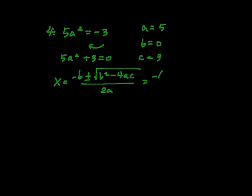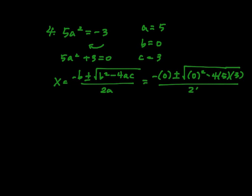Let's go ahead and substitute. So we have negative 0 plus or minus the square root of 0 squared minus 4 times 5 times 3, and then I have 2 times 5.